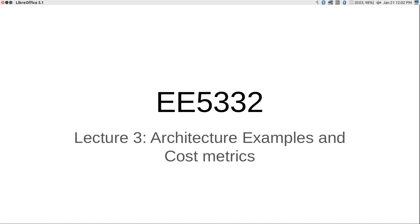After that I am going to talk a little bit about cost metrics. When you come up with different designs, as opposed to analysis where you can pretty much come up with a unique answer, design is a slightly different process — in general there is no unique answer. There might be multiple different designs that each are good in one way or another. From the point of view of this course — mapping DSP algorithms onto architectures — we are going to look at a few different cost metrics to understand which ones are good and what we would consider a good design versus something not so good.